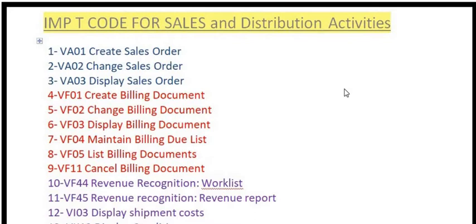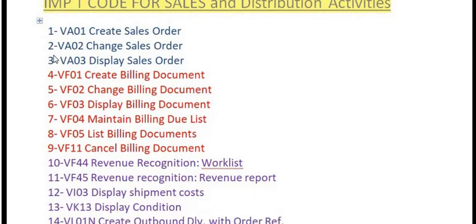The first transaction code is VA01 for the creation of a sales order. The second transaction code is VA02 for making any changes to the sales order. For example, if you have created a sales order and want to make any type of changes, you use VA02.